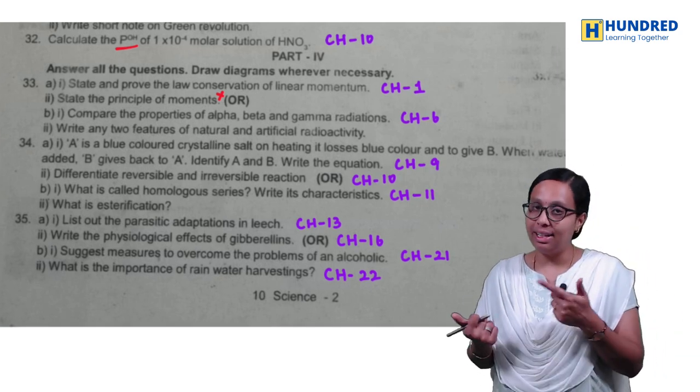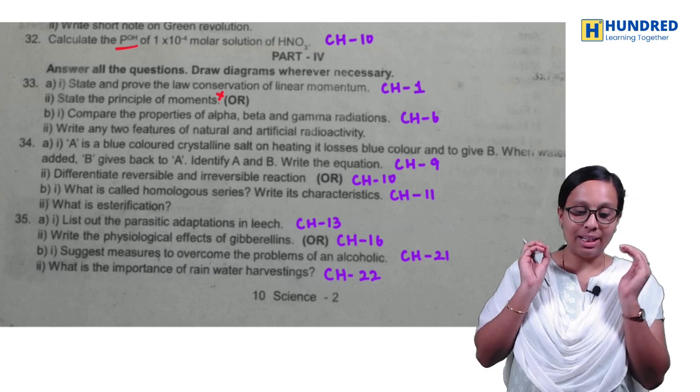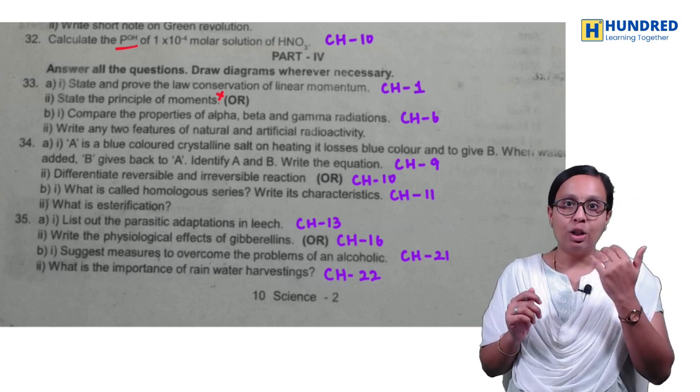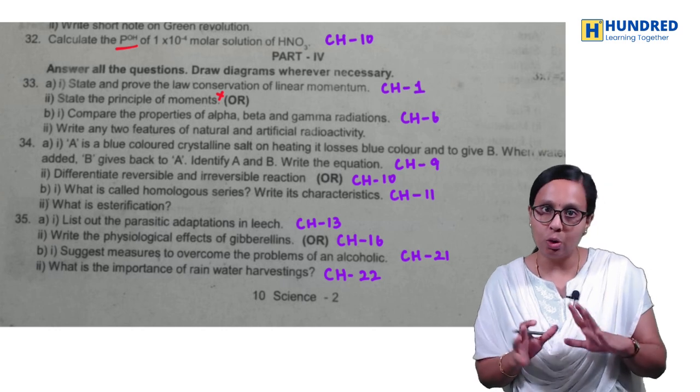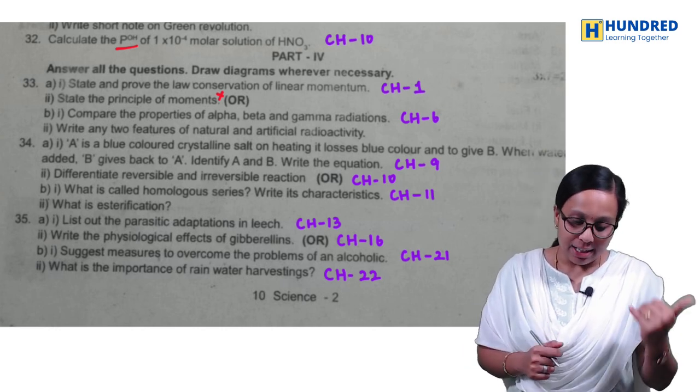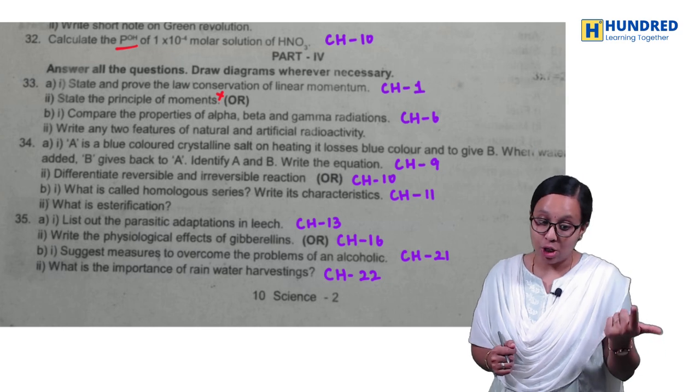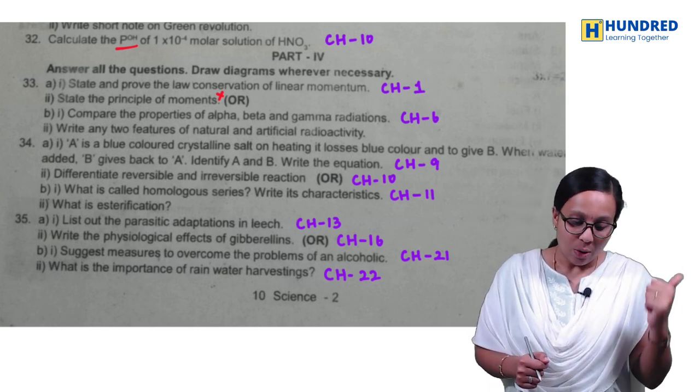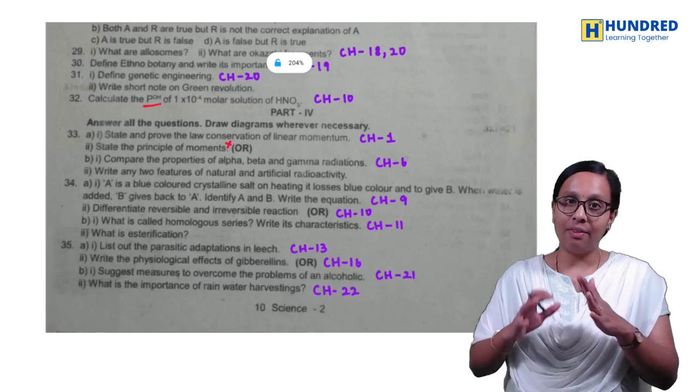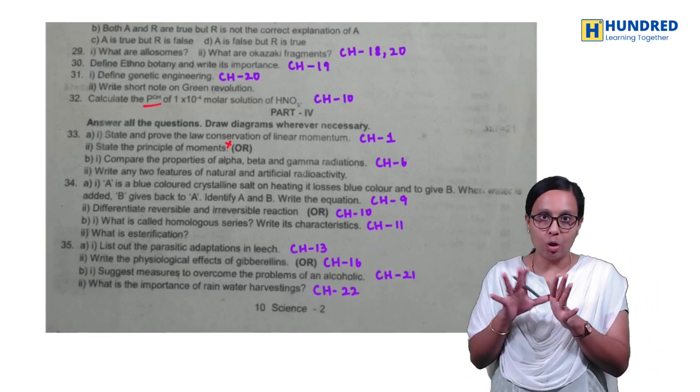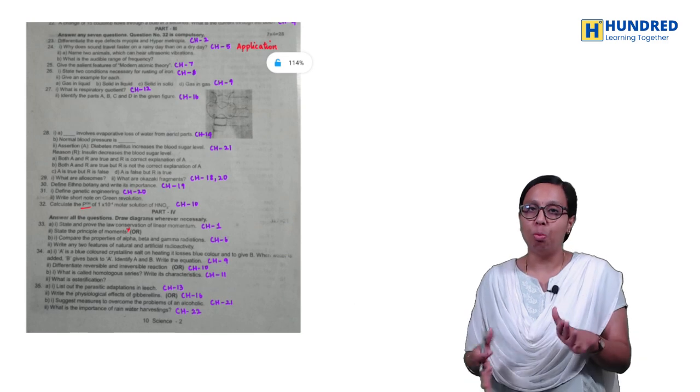Then, what is called homologous series, write its characteristics, this is mentioned. So, what is esterification? So, this is an important question. So, in the paper, seven marks, moderate. So, we have a little bit easier. So, in the question paper, we have a little bit tricky. Then, biology, list out the parasitic adaptations in leech. And then, physiological effects of gibberellins. And then, suggest measures to overcome the problems of an alcoholic. Two people, you may repeat on a question. What is the importance of rainwater harvesting? So, this is an important question. So, chemistry, physics, we have five marks here. It is a little bit tough. It is a little bit moderate. But, two marks, four marks are easy. So, this question paper is also kind of moderate. It is a little bit moderate.